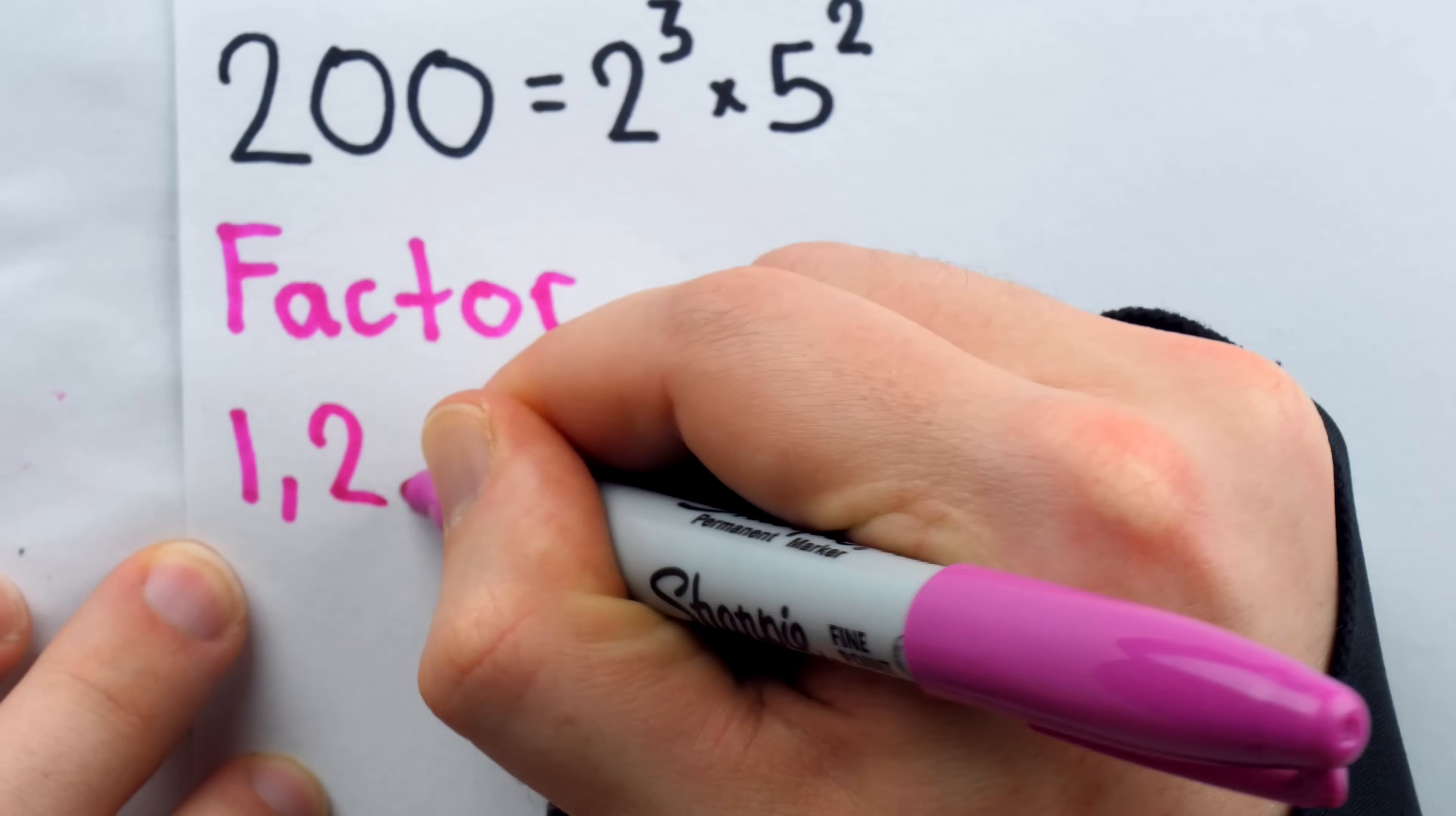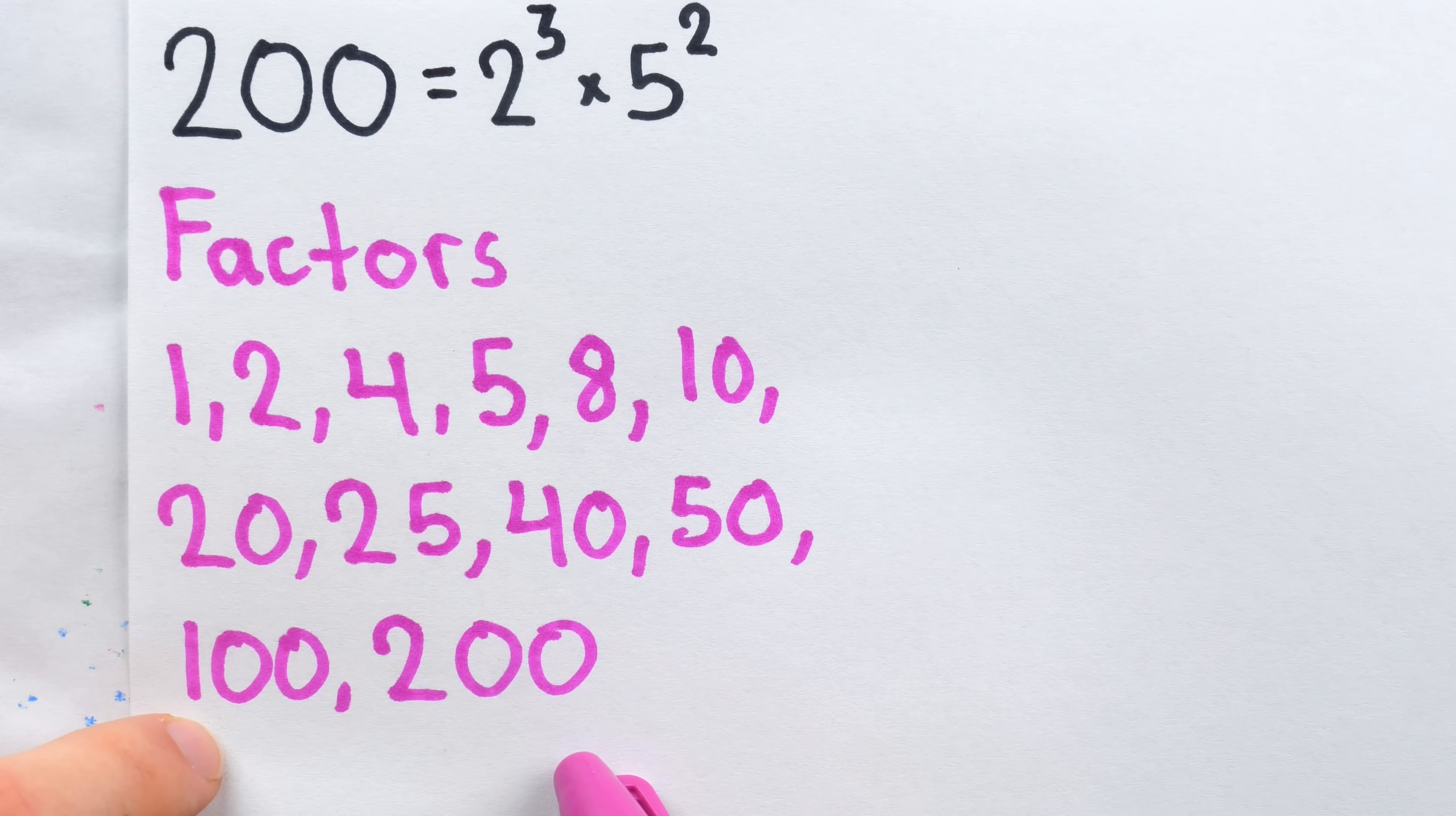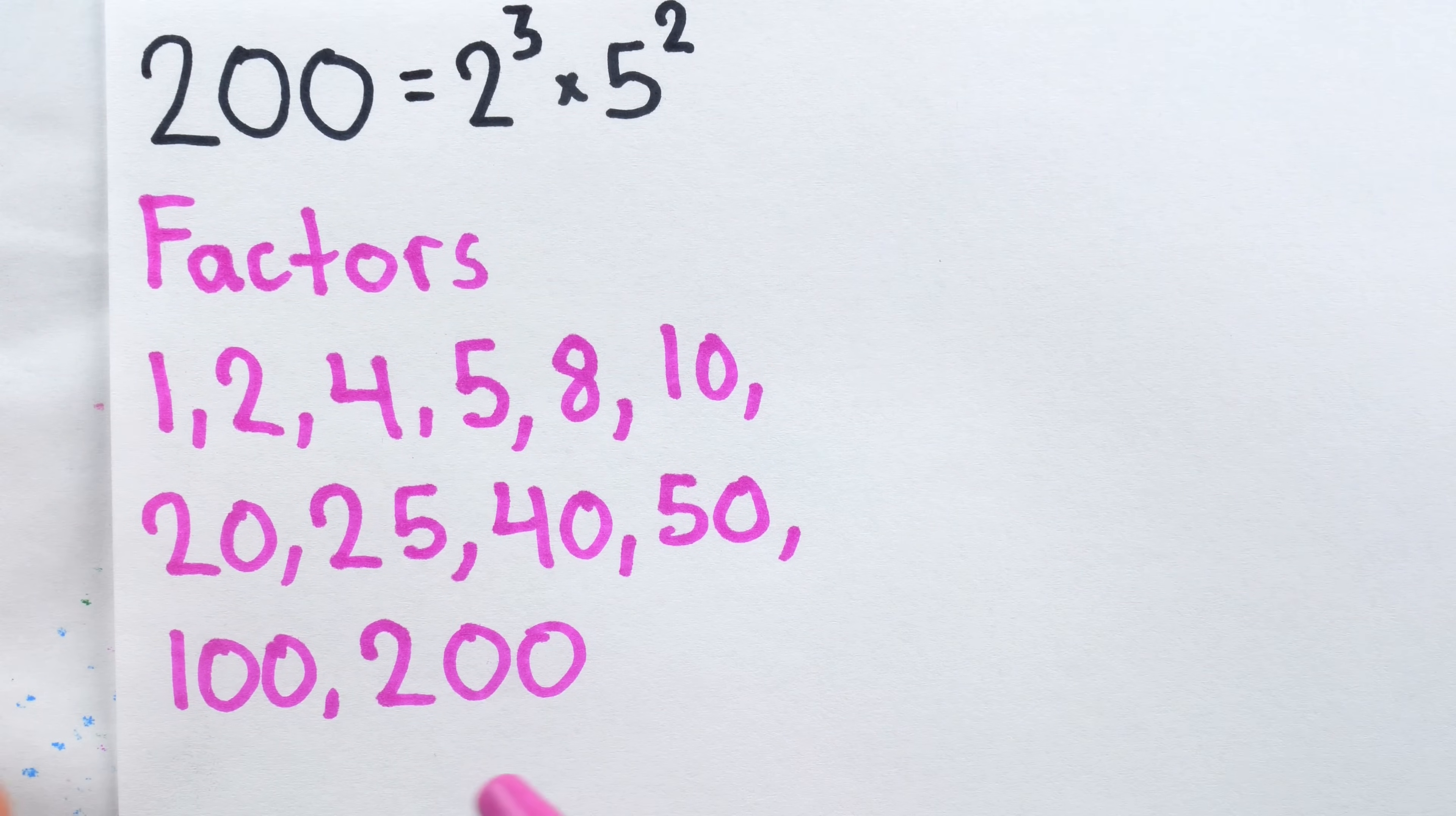The factors of 200 are 1, 2, 4, 5, 8, 10, 20, 25, 40, 50, 100, and of course 200 itself. If adding all of these factors of 200 together gives us back 2 times 200, then 200 is one of those mythical perfect numbers. But it's not. There are 12 factors here, and when we add them all up, we get something much bigger than 400.